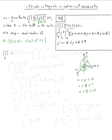The triple integral over the ball of √(x² + y² + z²) dV equals the integral with θ from 0 to 2π, φ from 0 to π, ρ from 0 to √3. Now x² + y² + z² = ρ², so the square root gives ρ. Don't forget to include the Jacobian factor ρ² sin φ, giving ρ · ρ² sin φ dρ dφ dθ.